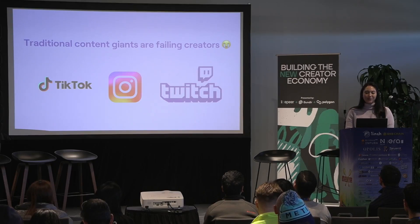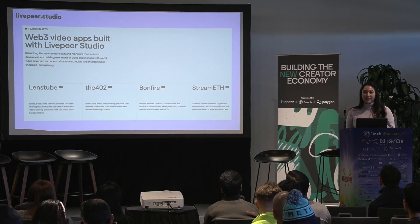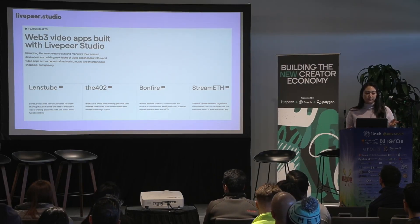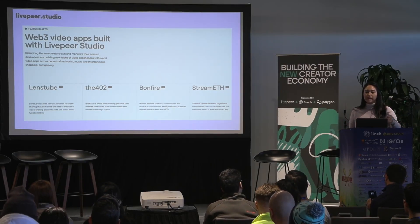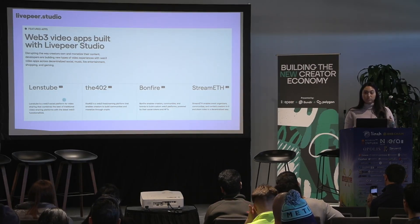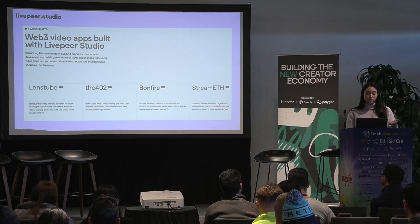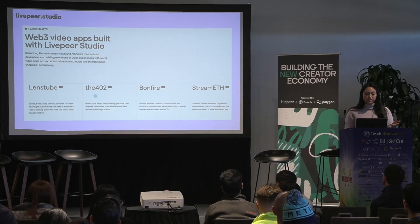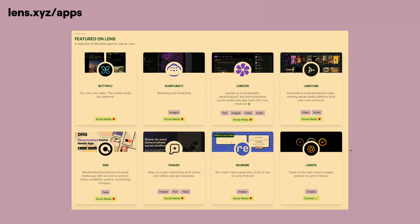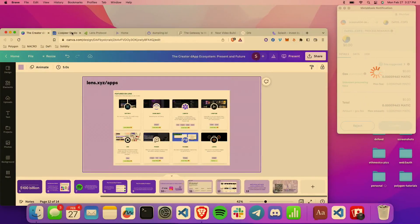Luckily there's hope. I found two different links that give a really good overview of the dApps in the creator space that exist today. First you can go to LivePeer Studio — they highlighted four different dApps: LensTube, which is really similar to a decentralized YouTube; The 402, which is a live streaming platform; Bonfire, which has tons of different tools; and StreamEth. Lens also has this huge ecosystem of dApps.